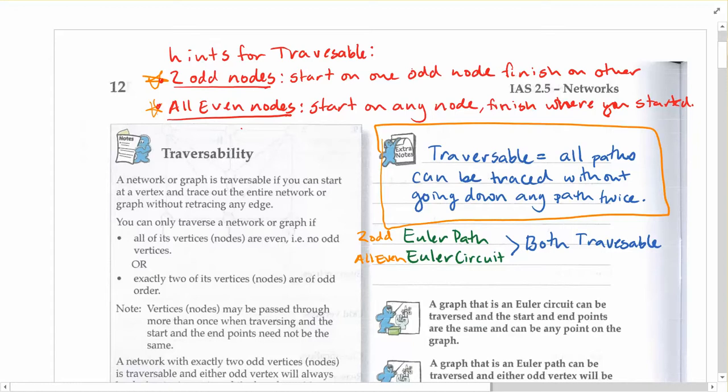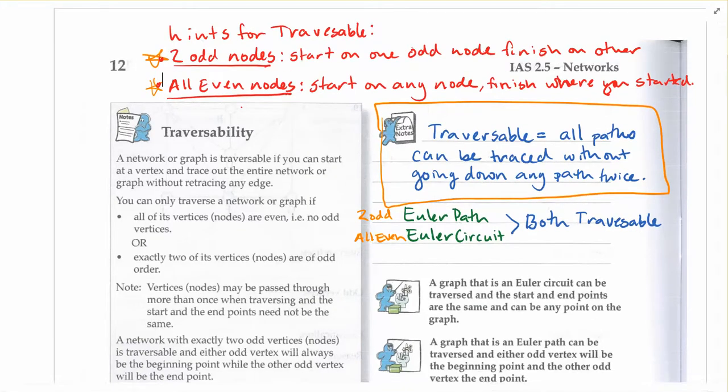Any other situation? For instance, only one odd node can't make it traversable, or four odd nodes cannot make it traversable. So it's very similar to Euler.